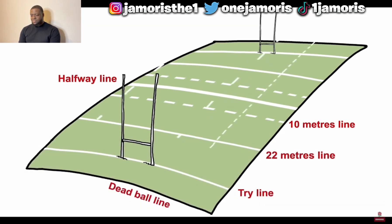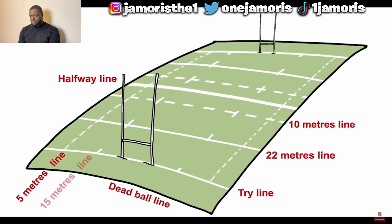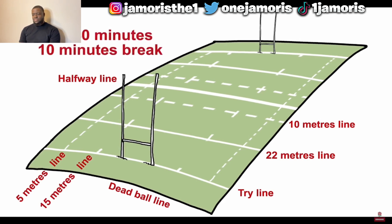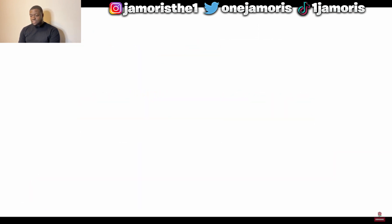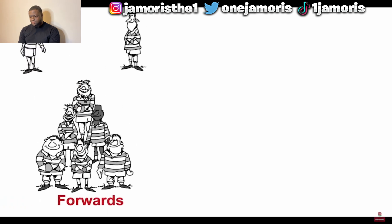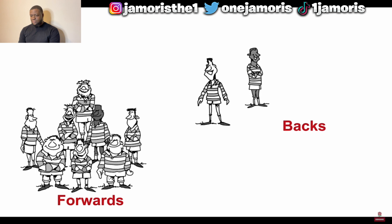Out of bounds. On the sides, you find the 5 meters line and the 15 meters line. During a line out, the players must stay between these lines. A game is two halves of 40 minutes and has a halftime break of about 10 minutes. 40 minutes? A rugby team has 15 players. Eight of them are called the forwards — they form the scrum and line out and do the more heavy work. Then you have seven players called the backs, and they do most of the fast running.